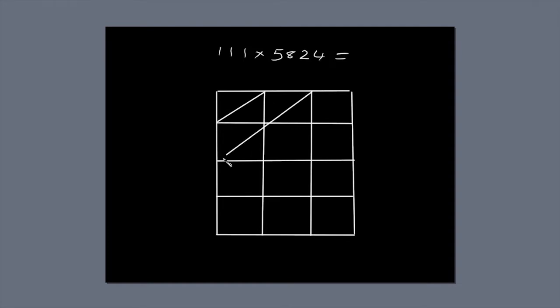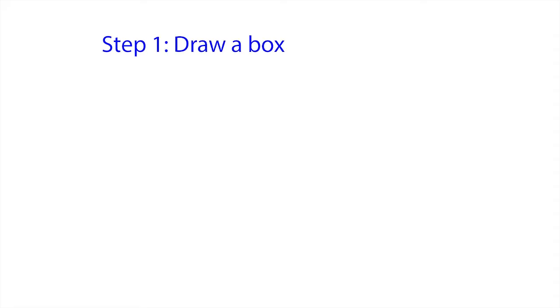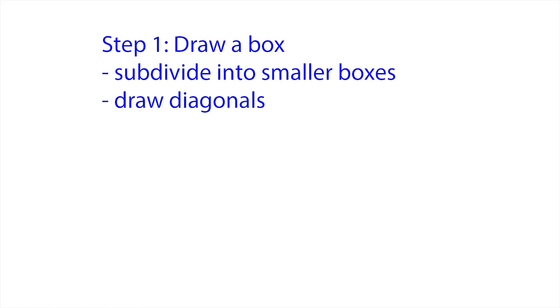Next, draw a diagonal line through each of the twelve small boxes. You might find you can draw a diagonal through more than one of the smaller boxes at a time. That's step one. Draw a box, subdivide it into smaller boxes, and draw diagonals through them.